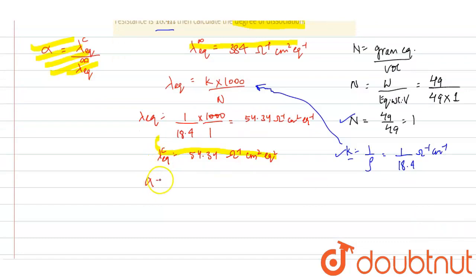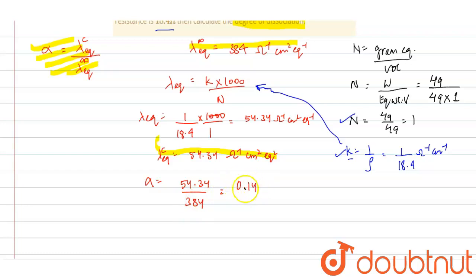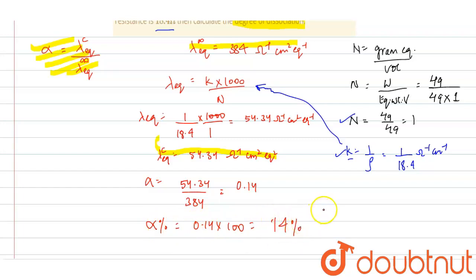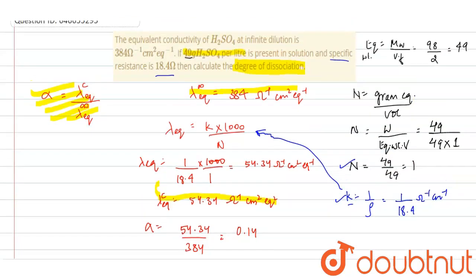Therefore, alpha (α) = 54.34 divided by 384, which gives approximately 0.14. Multiplying by 100 to get the percentage, we get 14%. So H₂SO₄ is dissociated up to 14%.